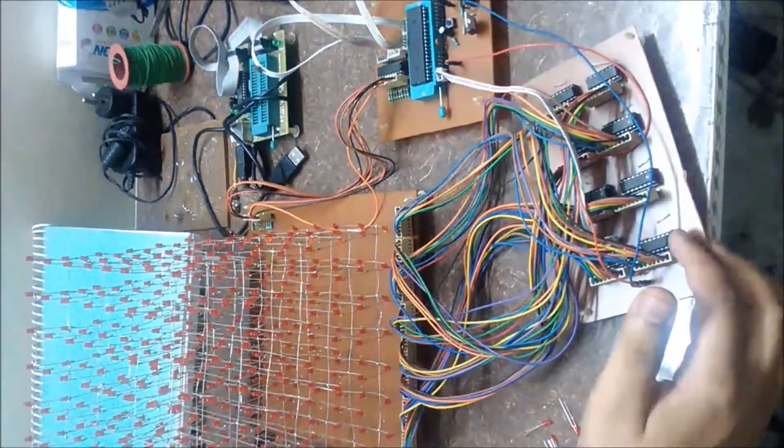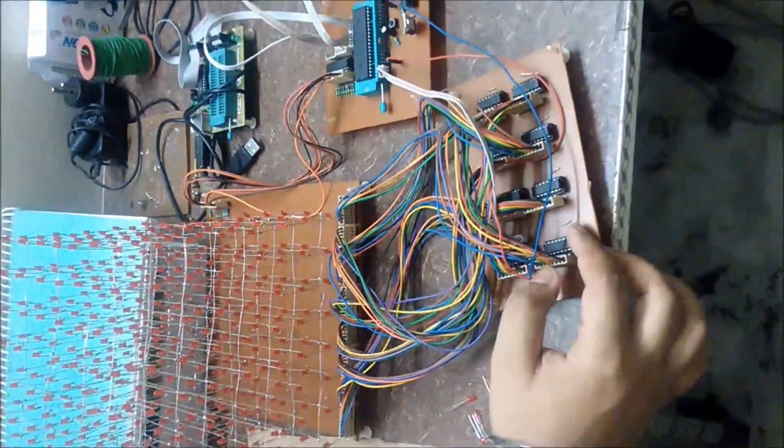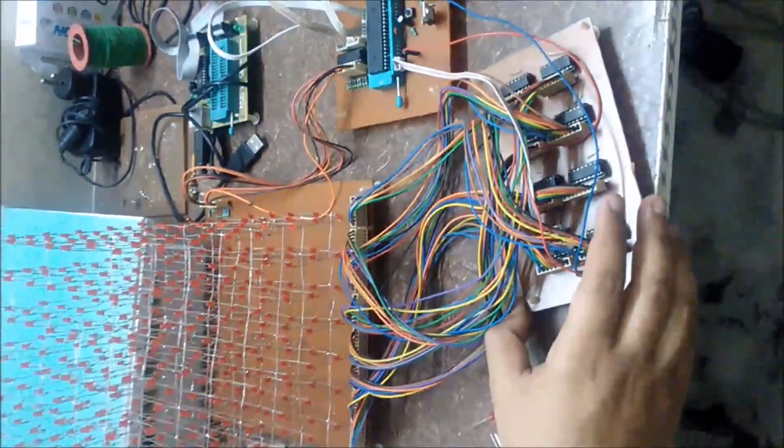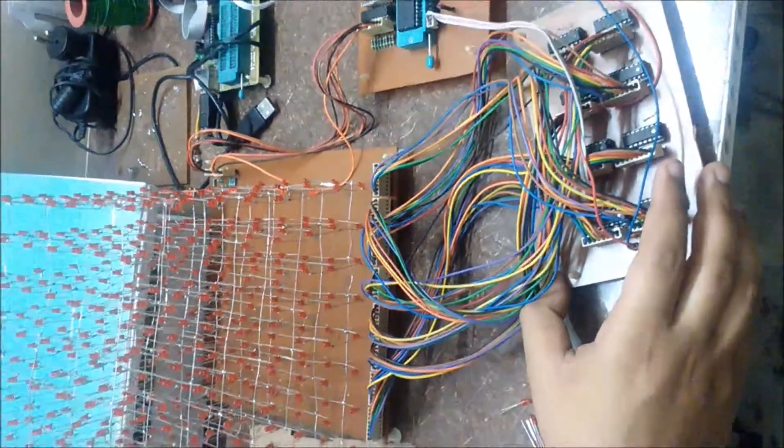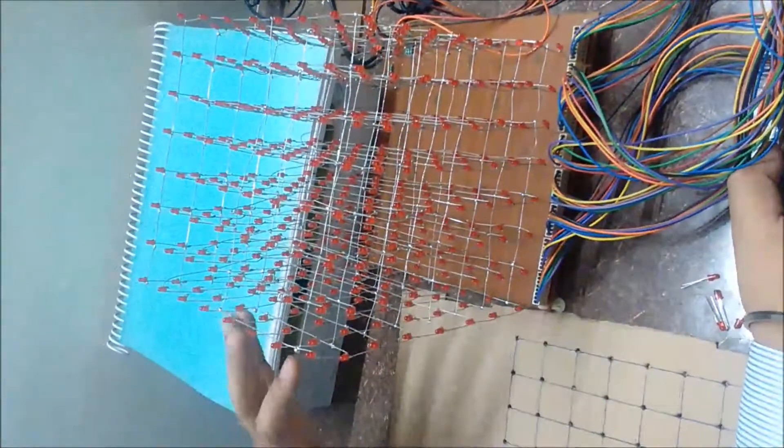I have used 74HC595 shift registers. Eight shift registers control the columns of the LED cube. There are 8 rows and 64 columns.